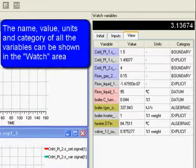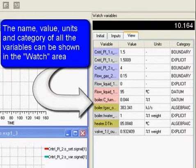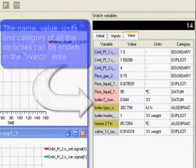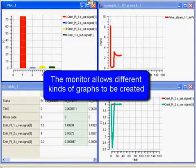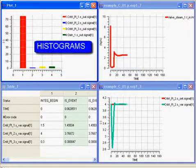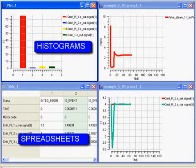The name, value, units and category of all the variables can be shown in the watch area. The monitor allows different kinds of graphs to be created. Histograms, spreadsheets, plotters.